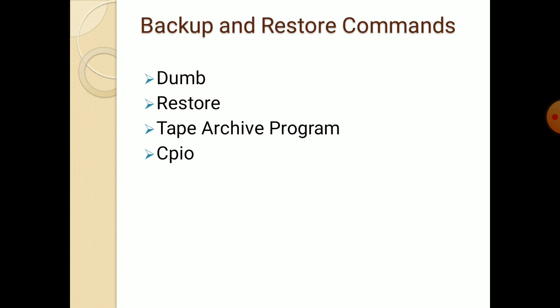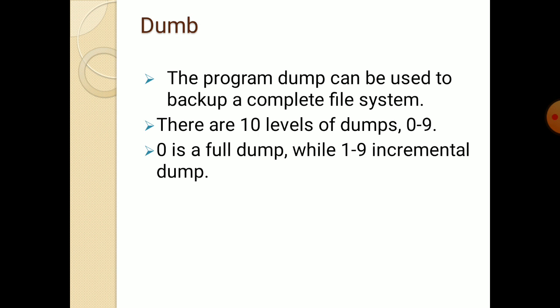Backup and restore commands. Here we will be discussing about four commands: Dump, Restore, Tape Archive Program, and cpio. The program Dump can be used to backup a complete file system. There are 10 levels of Dump, 0 to 9. Level 0 is a full dump, while levels 1 to 9 are incremental dumps. Level 1 includes everything changed since the last level 0 dump, and level 9 includes files changed since the last lower-level numbered dump.